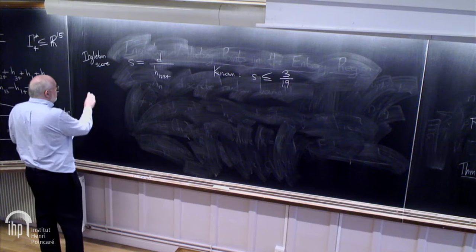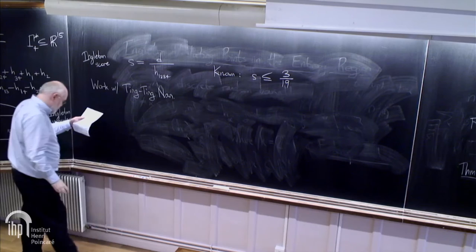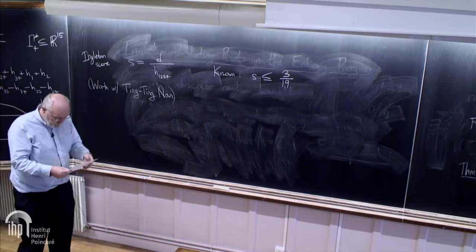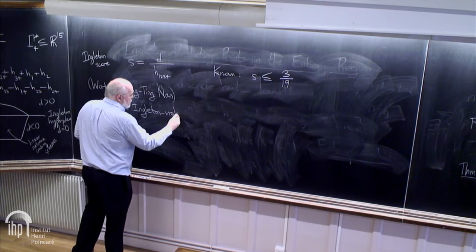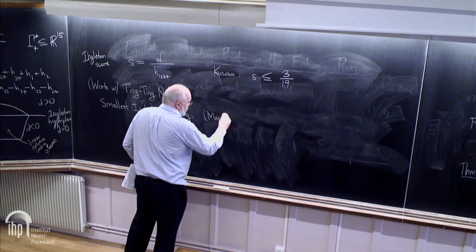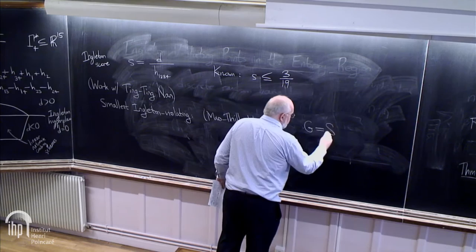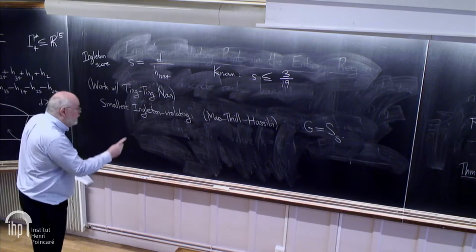This is work with a former student of mine, now at Google, Ting Ting Nan. I'm interested in producing points over here and asking how far does it stretch outwards. The smallest Ingleton violating case in terms of groups was found by Mao, Thil, and Hasibi a couple of years ago. Their group is all permutations of 5, so S5—a group of size 5 factorial, 120.